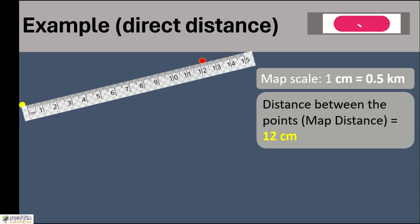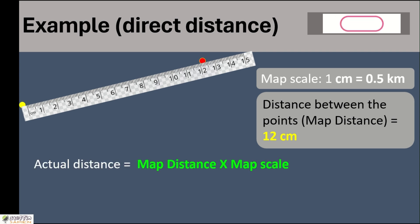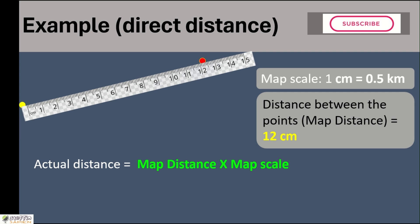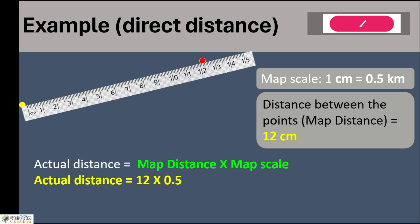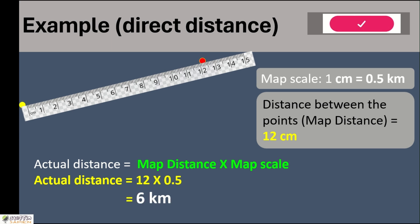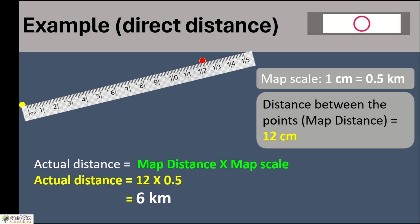To calculate the actual distance or ground distance, the formula is: actual distance equals map distance multiplied by map scale. We have the map scale of 1 centimeter to 0.5 kilometers and the map distance of 12 centimeters. So: actual distance = 12 × 0.5 = 6 kilometers. This is how we calculate direct distance.